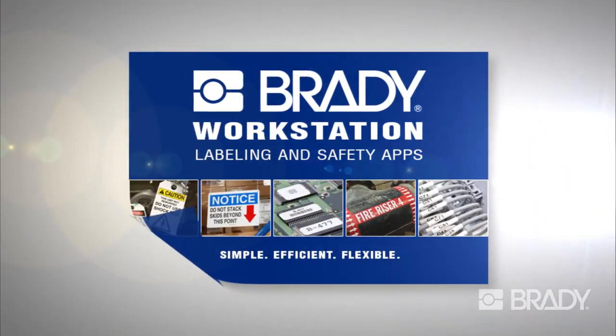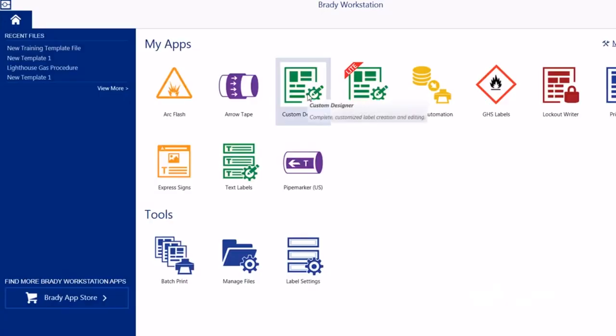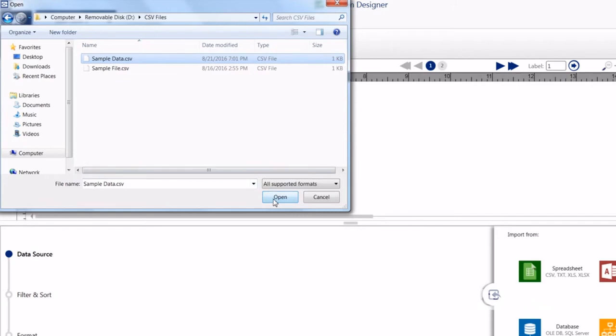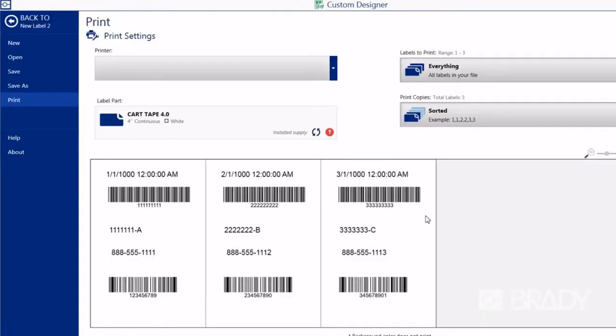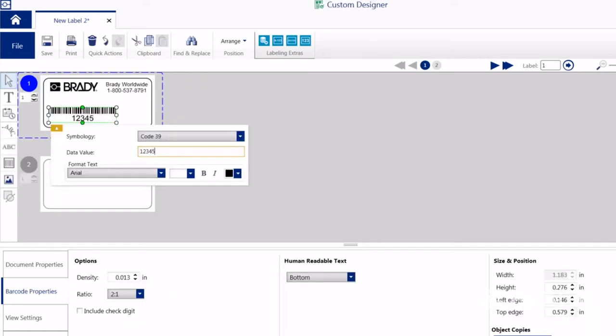Brady's powerful and easy-to-use Brady Workstation software works seamlessly with the Raptor A6500. Brady Workstation optimizes the label design process with the ability to import spreadsheet data, print true-type fonts, barcodes, and custom graphics.